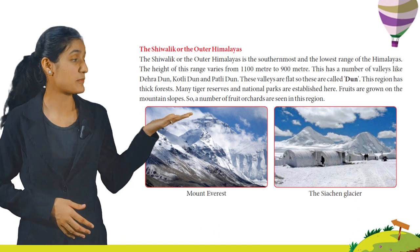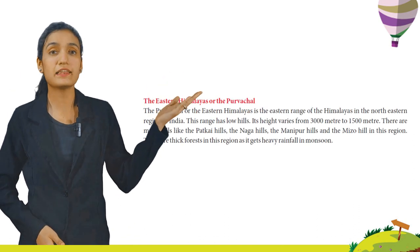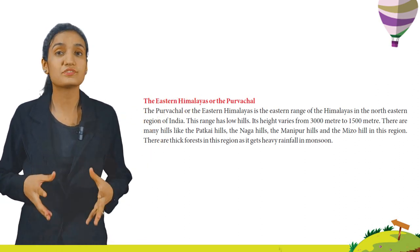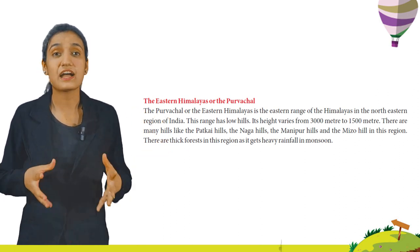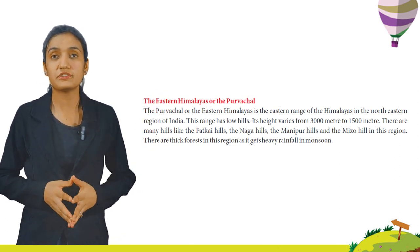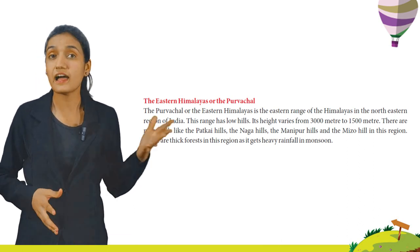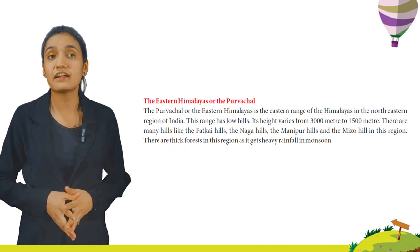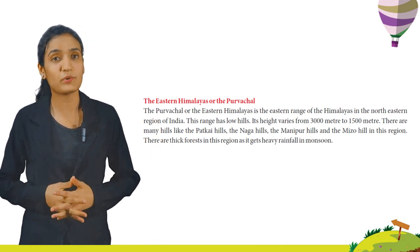The Purvachal or the Eastern Himalayas is the eastern range of the Himalayas in the north-eastern region of India. This range has low hills with height varying from 1,500 meters to 3,000 meters. There are many hills like the Patkai hills, the Naga hills, the Manipur hills and the Mizo hills in this region. There are thick forests in this region as it gets heavy rainfall in monsoon.